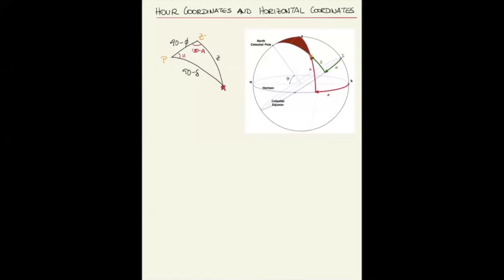Let's now solve the trigonometry. Side little a is z (zenith distance), side little b is 90 minus φ (latitude), side little c is 90 minus δ (declination). The angle A equals the hour angle H, and angle C equals 180 minus A. Note: I'm using A-prime for the azimuth angle here to avoid notational confusion with side a.